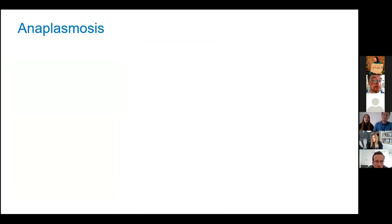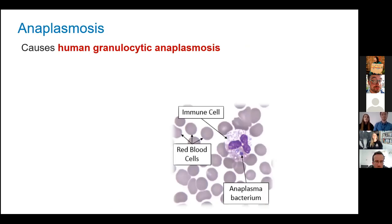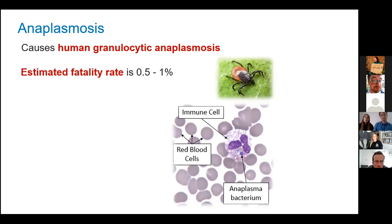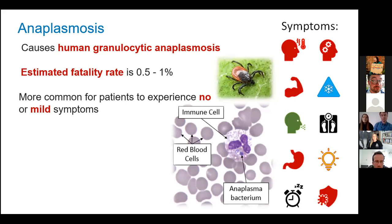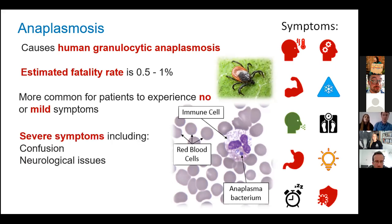Although Lyme disease is by far the most well-known pathogen, it's not the only bacterium that ticks are capable of carrying. Another bacterial example is anaplasmosis, which is a bacterium that can cause the disease human granulocytic anaplasmosis, where the bacterium attacks the blood's immune cells. Although there have been some recorded deaths due to this disease, most people who are infected will have at most mild flu-like symptoms. For a few unlucky patients, however, the disease can cause more severe outcomes such as respiratory failure, bleeding problems, and organ failure over a longer period of time.